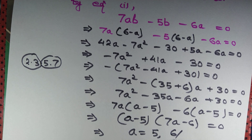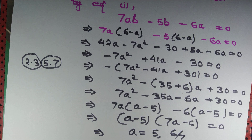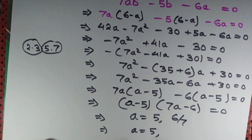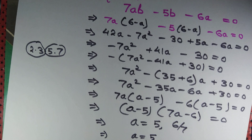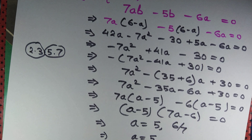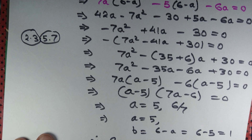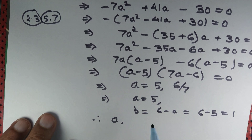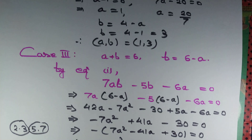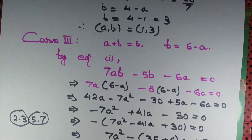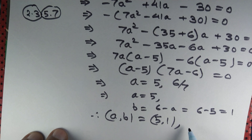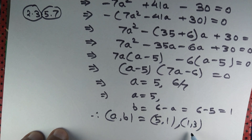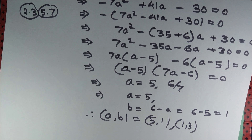From (a - 5)(7a - 6) = 0, we get a = 5 or a = 6/7. Since 6/7 is not an integer, a = 5 and b = 6 - 5 = 1. Therefore (a, b) = (5, 1). Combined with Case 2, the only integer solutions are (a, b) = (5, 1) and (a, b) = (1, 3).